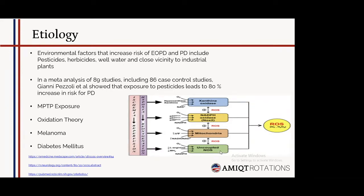Other etiological theories include MPTP exposure, the oxidation theory, melanoma, and diabetes mellitus. MPTP causes inhibition of the oxidative respiratory chain in the mitochondria, hypothesized to lead to Parkinson's disease. The oxidation theory holds that dopamine metabolism via the monoamine oxidase pathway produces hydrogen peroxide radicals, normally removed by glutathione. If glutathione levels are decreased or insufficient, buildup of these radicals causes damage leading to Parkinson's disease. Melanoma and diabetes mellitus can also result in Parkinson's disease through various established pathways.